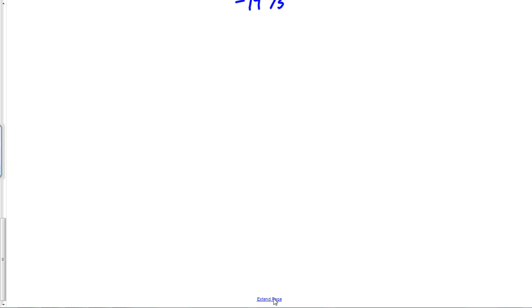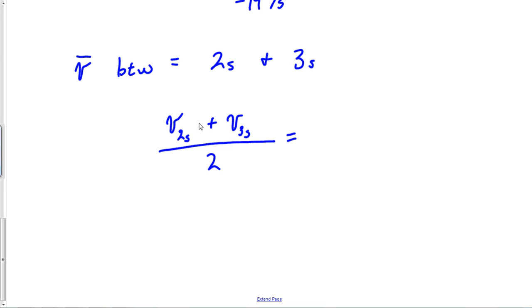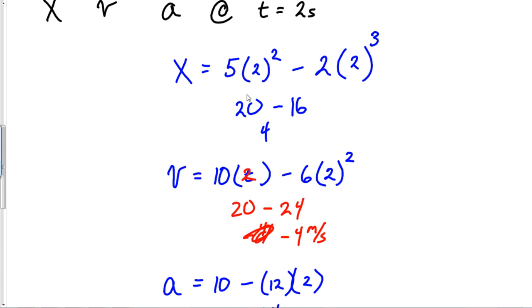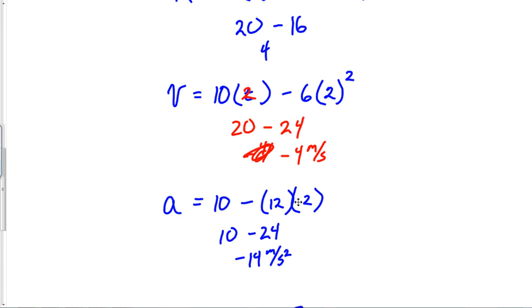Other things it might ask: you might have a problem that says find the average velocity between two seconds and three seconds. The thing is you've got two different ways you could do this. My way would be this: I would probably just find the velocity at two seconds, find the velocity at three seconds, add those up and divide by two. I've already found the velocity at two seconds. My velocity at two seconds was negative four.